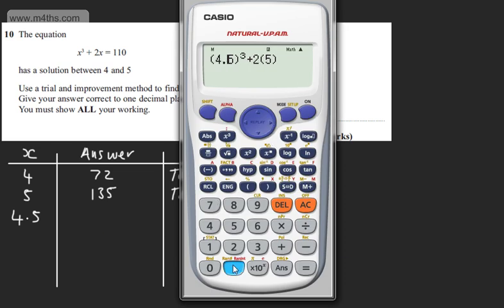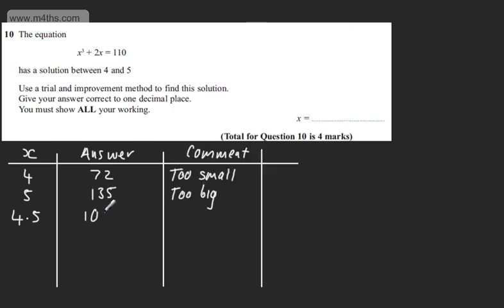So switching this over, I'm going to do it to 4.5. So let's do 4.5. That's going to give me 100.125. So let's put this in. So 100.125. We can say that this is too small.